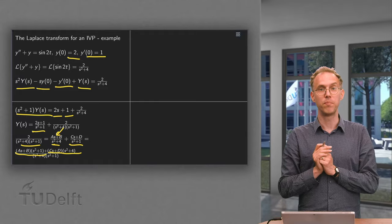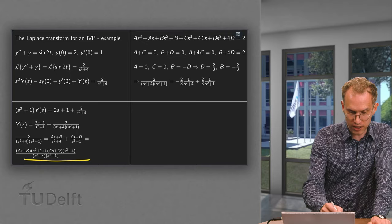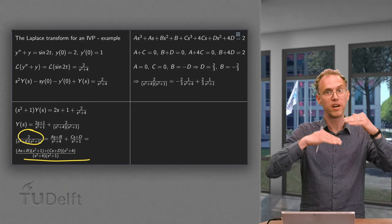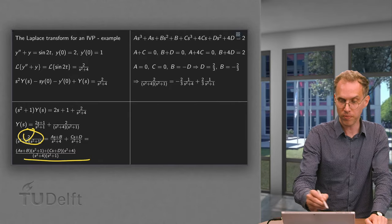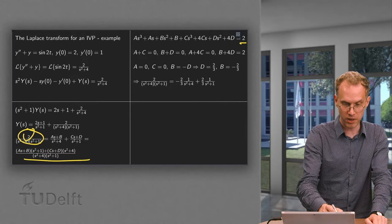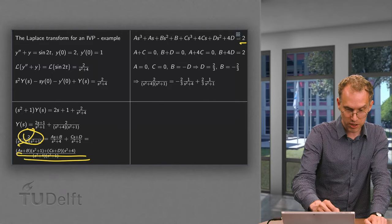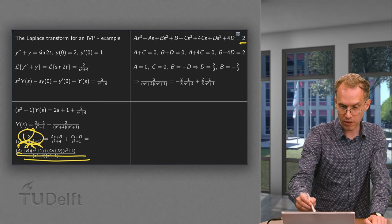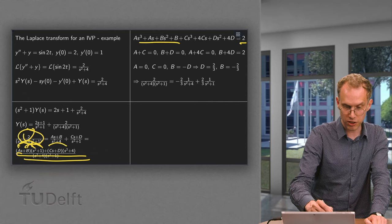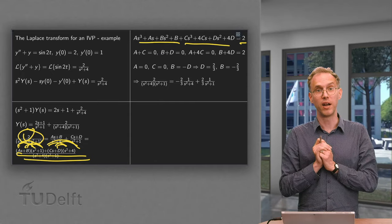Now we have one fraction again. We compare numerators: 2 on the left must equal the expanded expression on the right. Working out the brackets gives: As³ + As, Bs² + B, Cs³ + 4C, and Ds² + 4D. Then we compare powers of s: s³ gives A + C; s² gives B + D; s gives A + 4C; and the constant gives B + 4D.